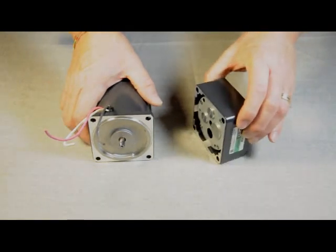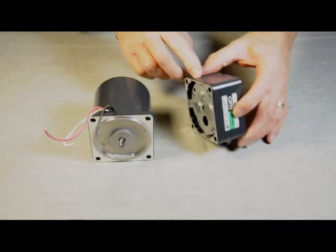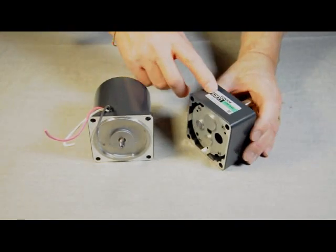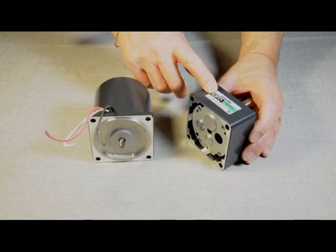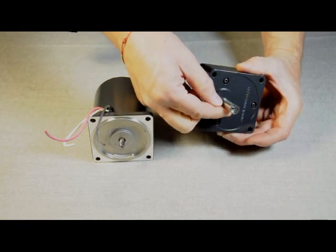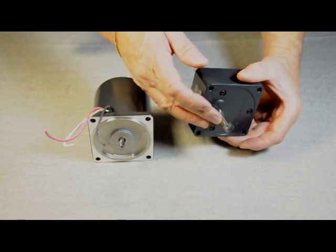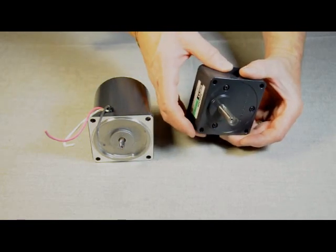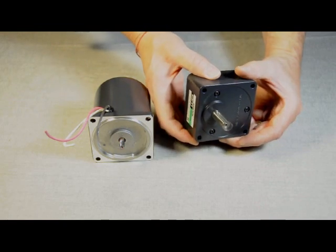The gear heads that are available range in size from 3 to 1 right up to 180 to 1. They're available in a metric shaft or an imperial shaft, and some are keyed, some have flats depending on the different ratios.